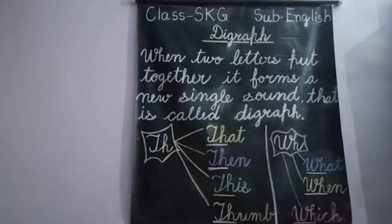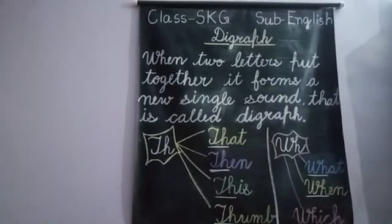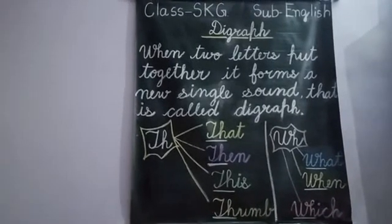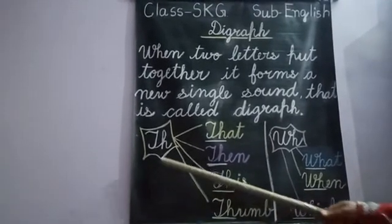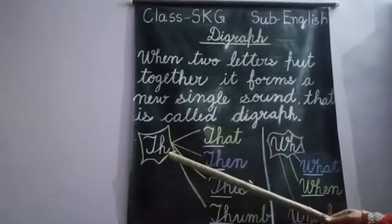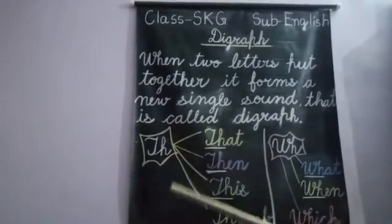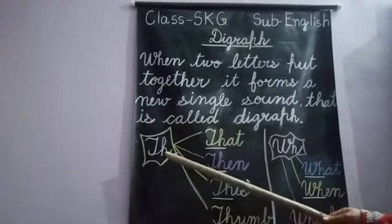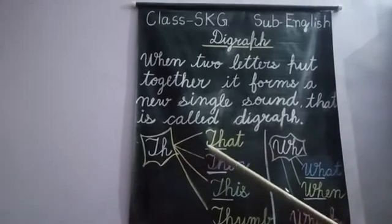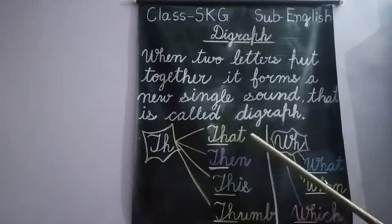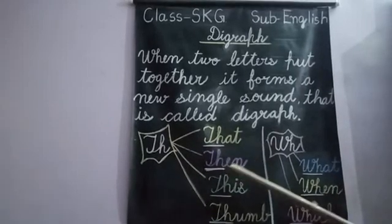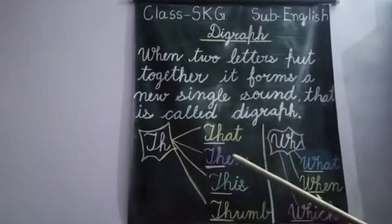Hello kids, today we are going to learn some more digraphs. When we put two different alphabets together, they will produce a single sound. For example, T-H-A-T: 'that', T-H-E: 'the', T-H-E-N: 'then'. The digraph is TH.